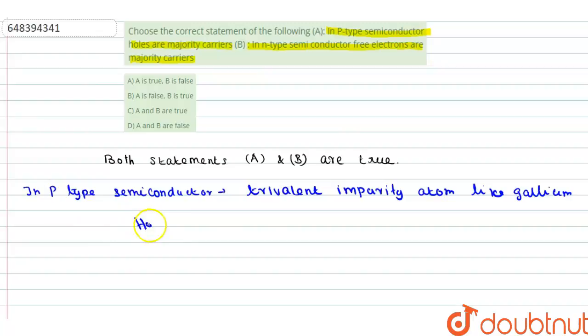Here the holes are majority carriers. Holes are majority carriers because the number of holes is much higher than the number of electrons in P-type semiconductor.